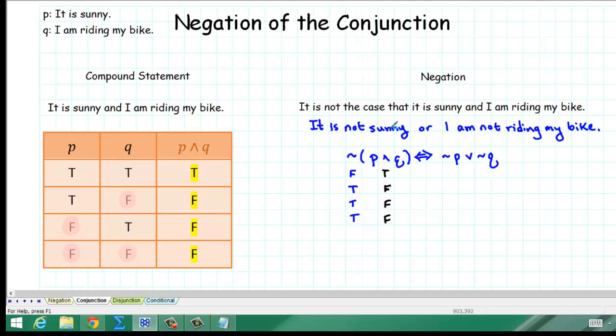Let's see what we get for the right-hand side. First of all, we'll start off with the negation of P. Well, for P, we have true, true, false, false. So, the negation will be false, false, true, true.